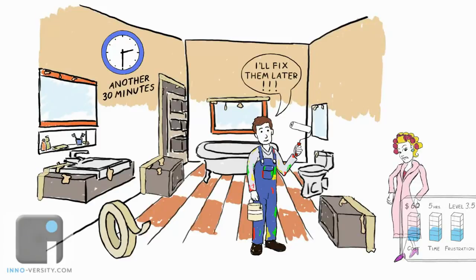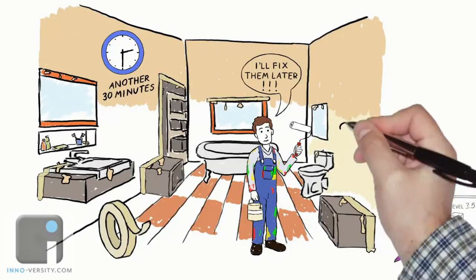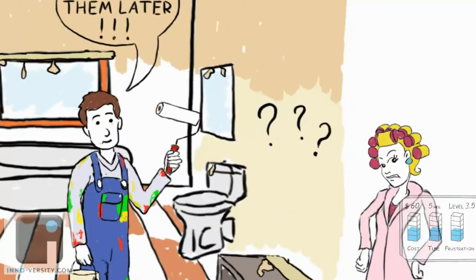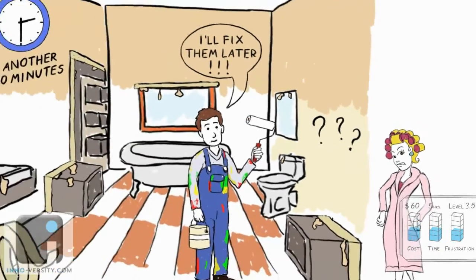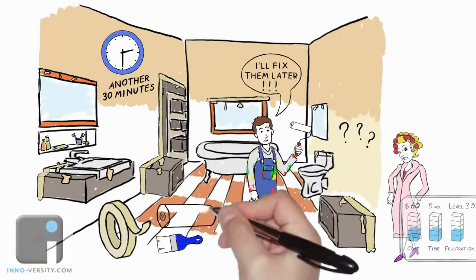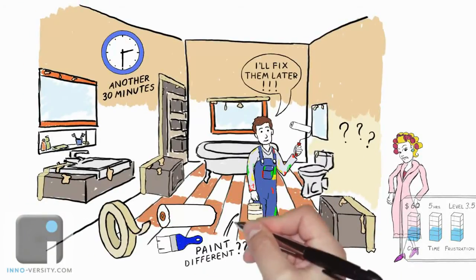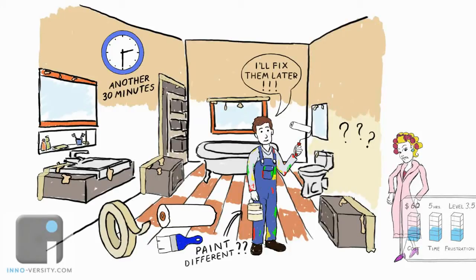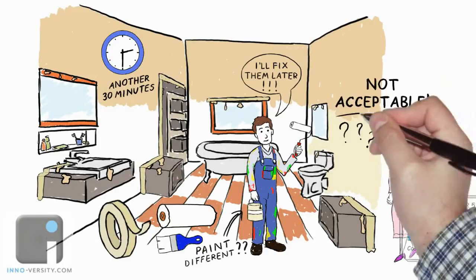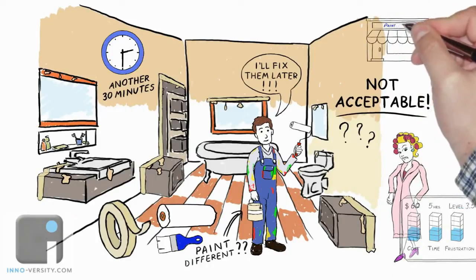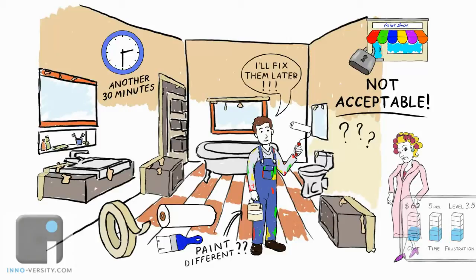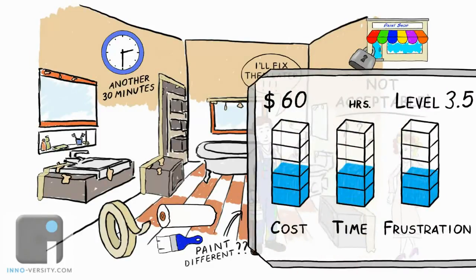He's finally ready to paint the bottom section of the walls and be done. He begins to apply the new paint, but then he notices something. It doesn't match the paint he's already applied to the top part of the walls. Now it might be that he's using a new brush and roller, or it could be that the second quart of paint is slightly different than the first. Either way, it's pretty clear that this isn't going to be acceptable. The paint store has already closed for the day, so he's done. So far, he's got sixty dollars into this, seven hours, and his frustration level has jumped up to a seven.